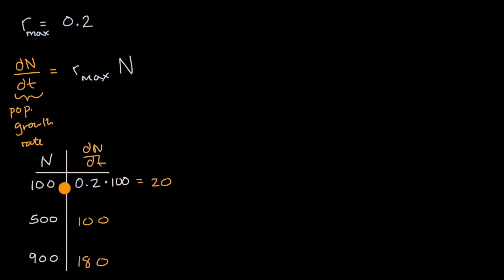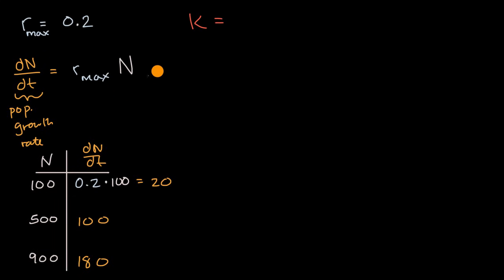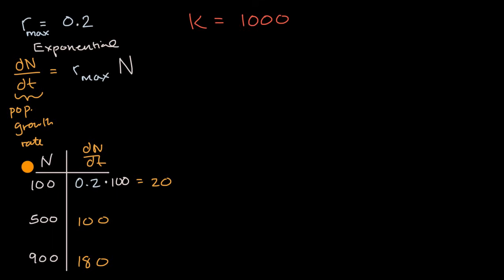This is a somewhat unrealistic situation where a population can just grow and grow and never be limited in any way. We know that land, food, and water are limited. So there's this notion of a natural carrying capacity of a given population in a given environment, and we use the letter K for that. Let's say for our bunnies on a relatively small island, the natural carrying capacity is 1,000 — the island really can't support more than 1,000 bunnies. So how would we change this exponential growth equation to reflect that? Mathematicians and biologists have modified it by multiplying by a factor to get what's known as logistic growth.